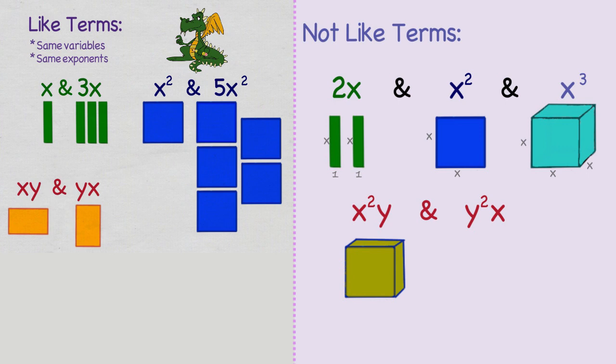But we can see these aren't the same. x squared y is x times x times y. And y squared x is y times y times x.